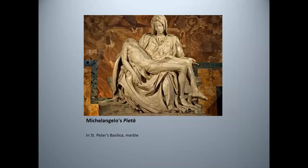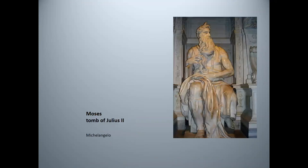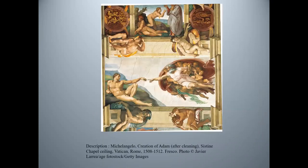Michelangelo started his career as a sculptor. His Pieta, the classic pose of Mary cradling the dead Christ, was sculpted sometime around 1496 while the artist was in his early 20s. David was completed in 1504. Pope Julius II commissioned Michelangelo to sculpt his tomb, a project he worked on for 40 years with a plan for 40 statues, including this image of Moses. During the time he was working on the tomb, he painted the frescoes on the ceiling of the Sistine Chapel in the years 1508 to 1512. This is a detail from the Creation of Adam, one of the panels on the ceiling.